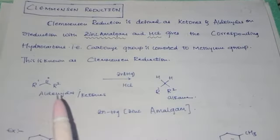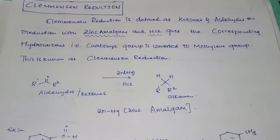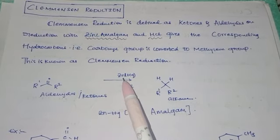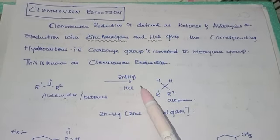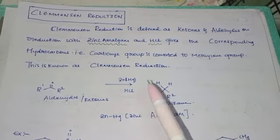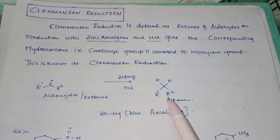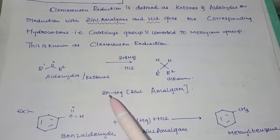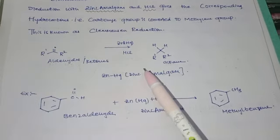For aldehydes and ketones, the zinc amalgam is Zn-Hg, then HCl reacts to form the alkane. Remember this: zinc amalgam is Zn-Hg, this is known as zinc amalgam.